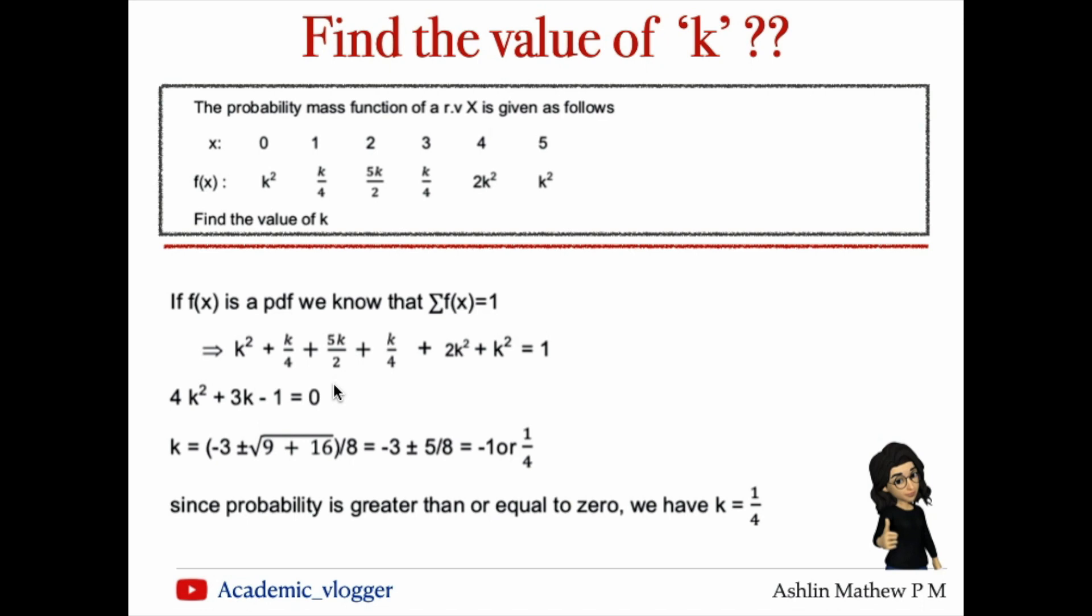But we know that f(x) values are probabilities, and probabilities cannot be less than 0. They must be values between 0 and 1.